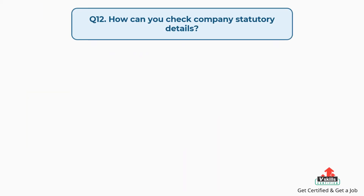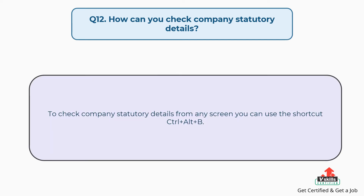Question number twelve: how can you check company statutory details? To check company statutory details from any screen, you can use the shortcut CTRL plus ALT plus B.